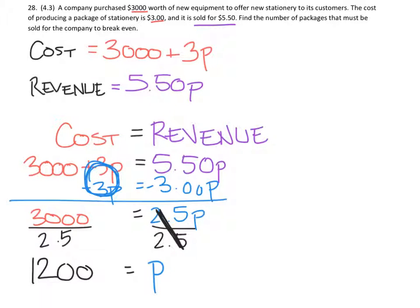So in actuality, P equals 1,200. And what does P represent back in our original problem? The break-even point then, P, is 1,200 packages.